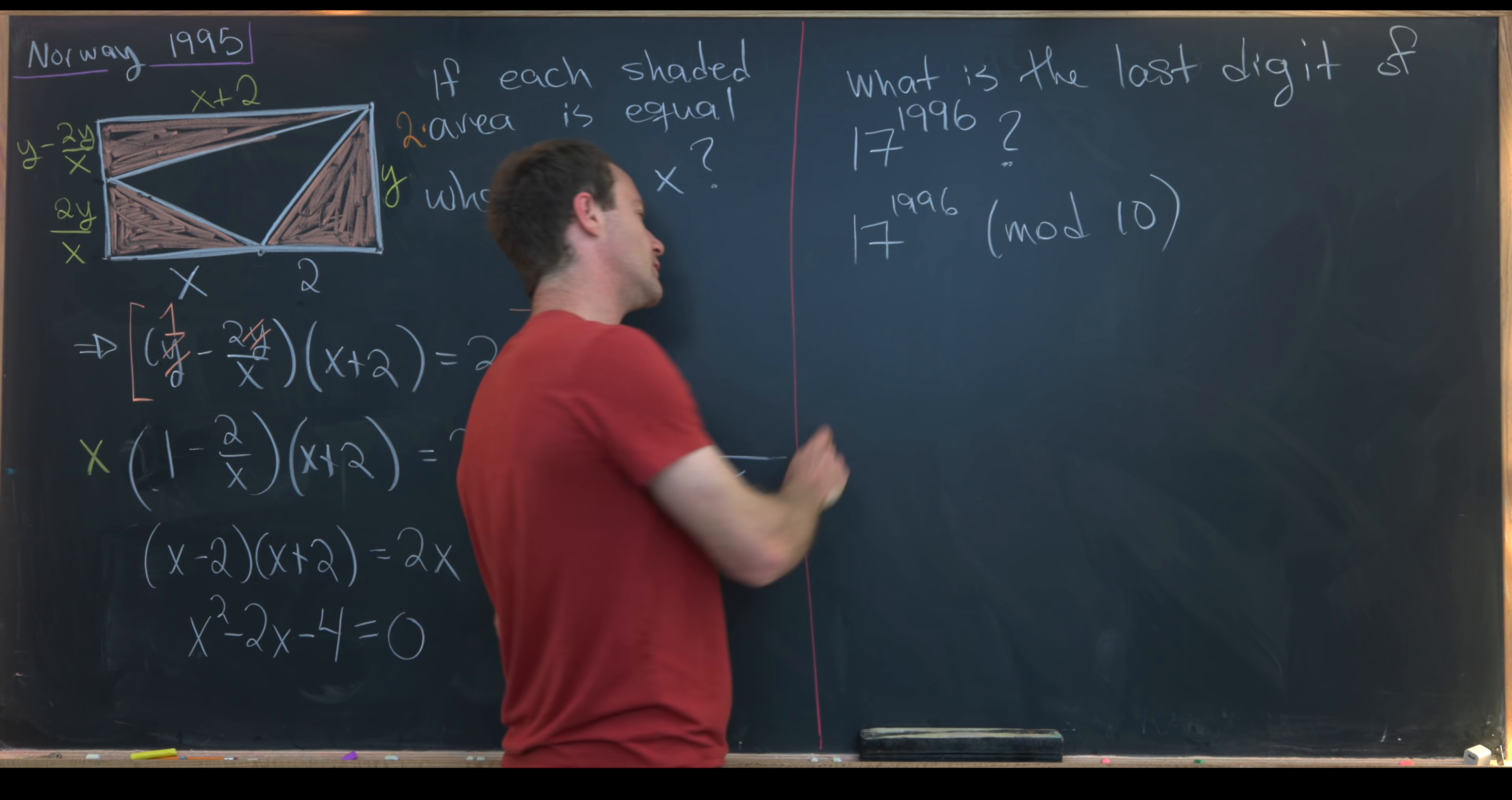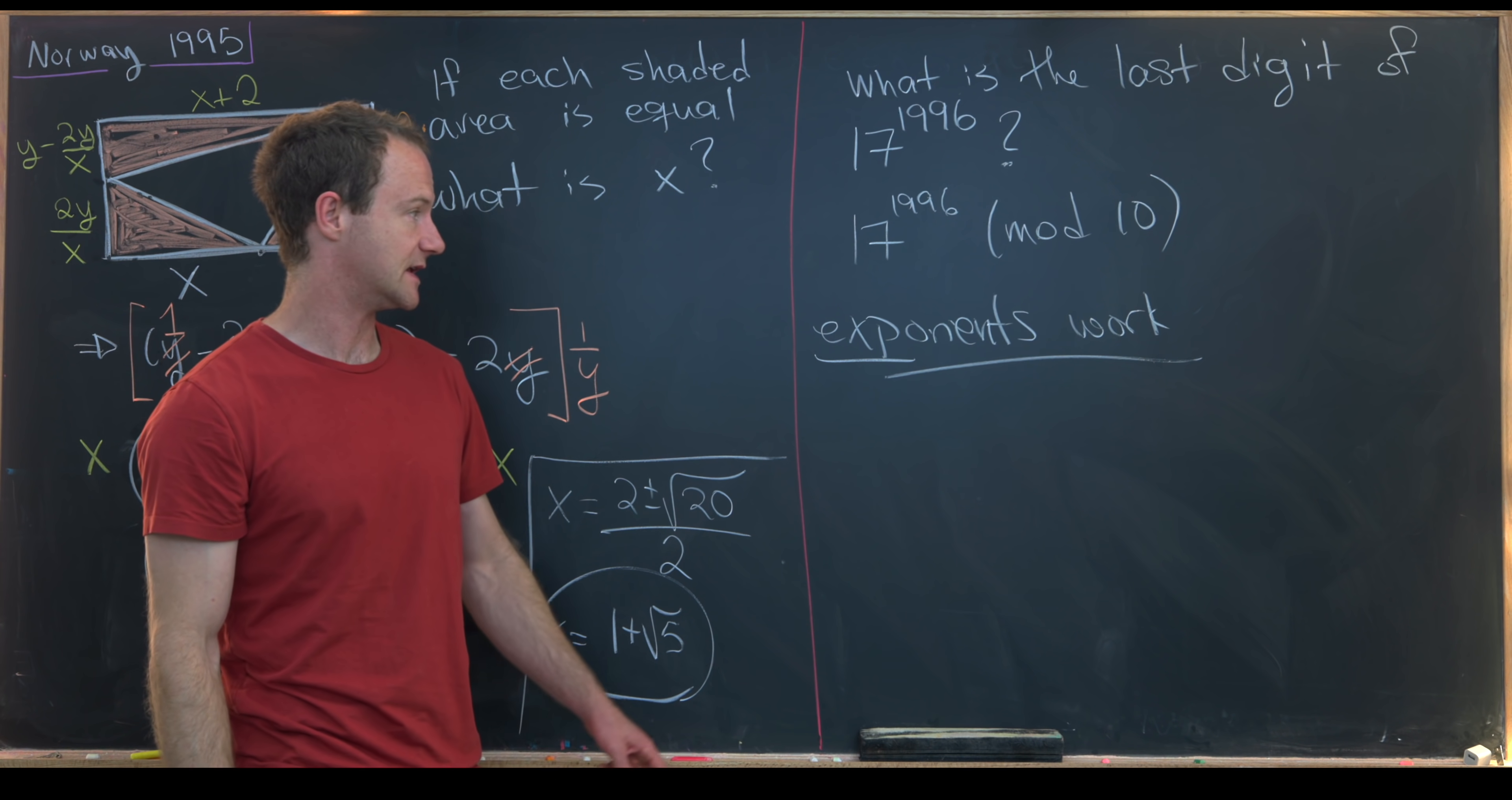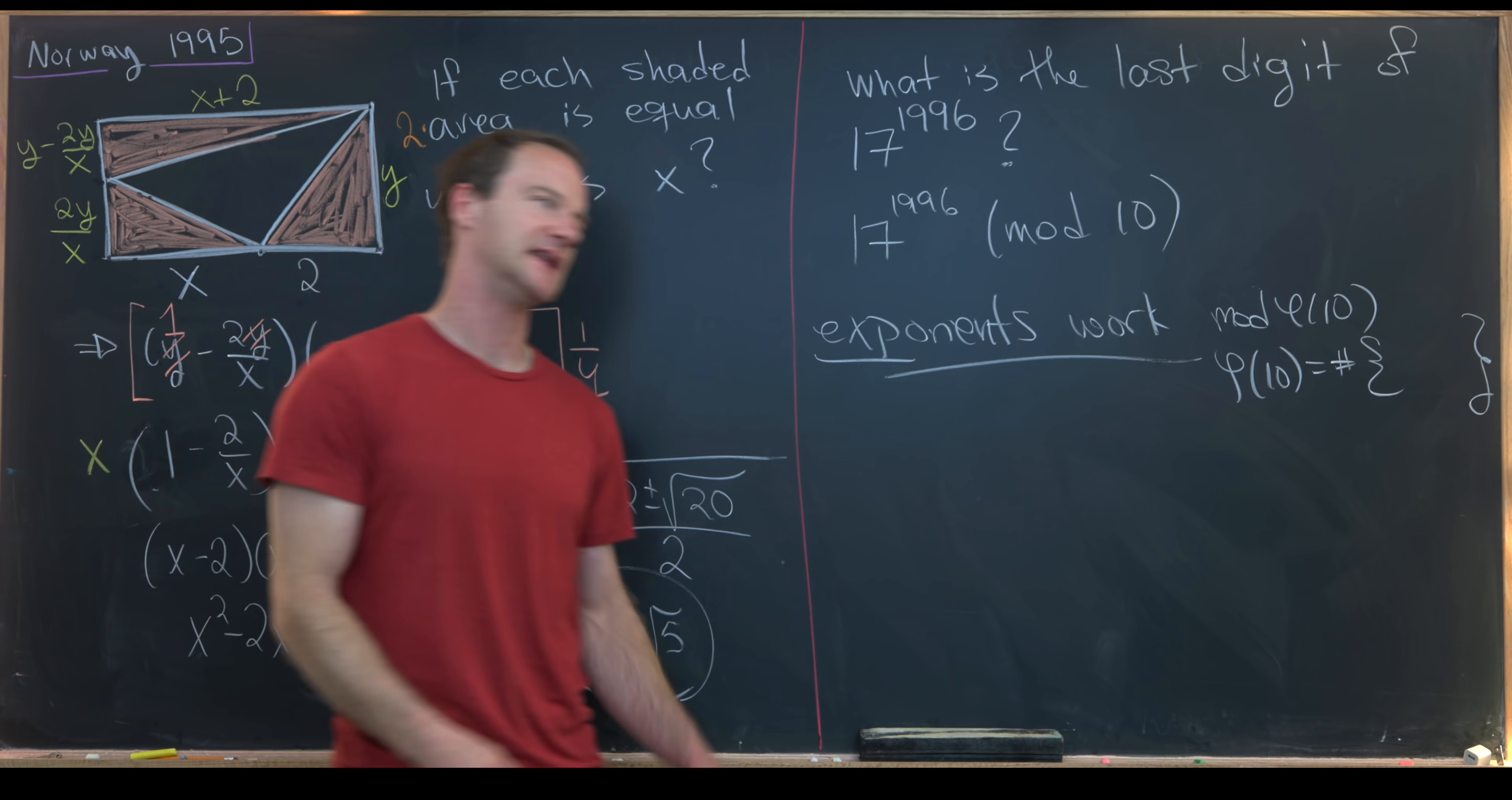So we want to remember that if we're reducing mod n, then exponents will work mod phi of n, which is Euler's phi function, which counts the number of numbers that are relatively prime to n. So here we want to notice that the exponents work mod phi of 10. We might want to calculate phi of 10, which is the number of elements in the set from 1 to 10 that are relatively prime to 10.